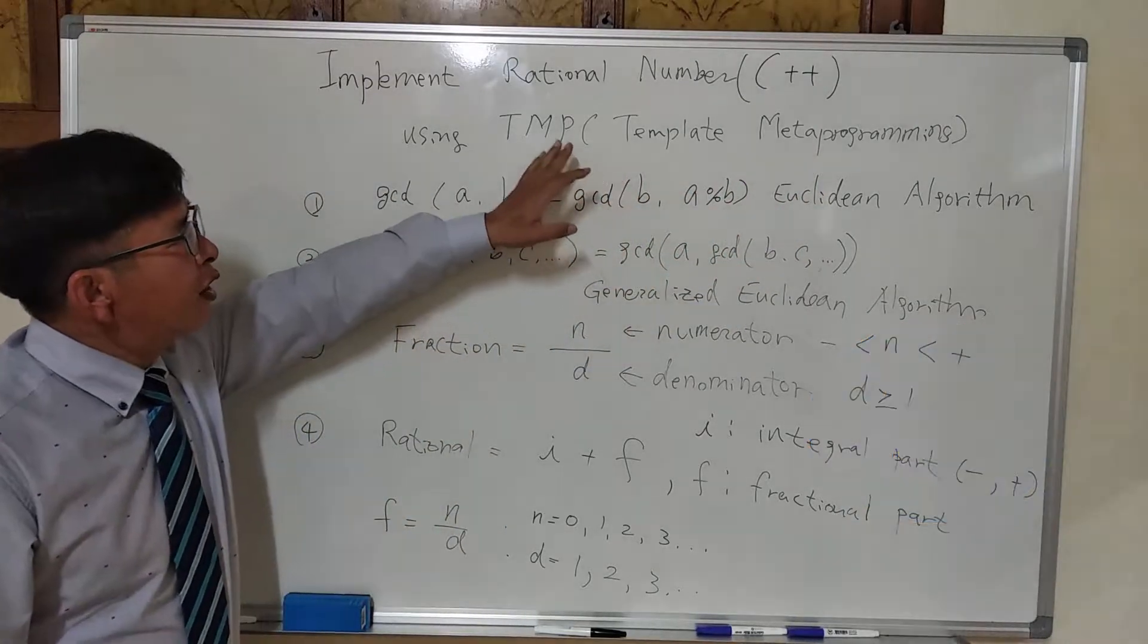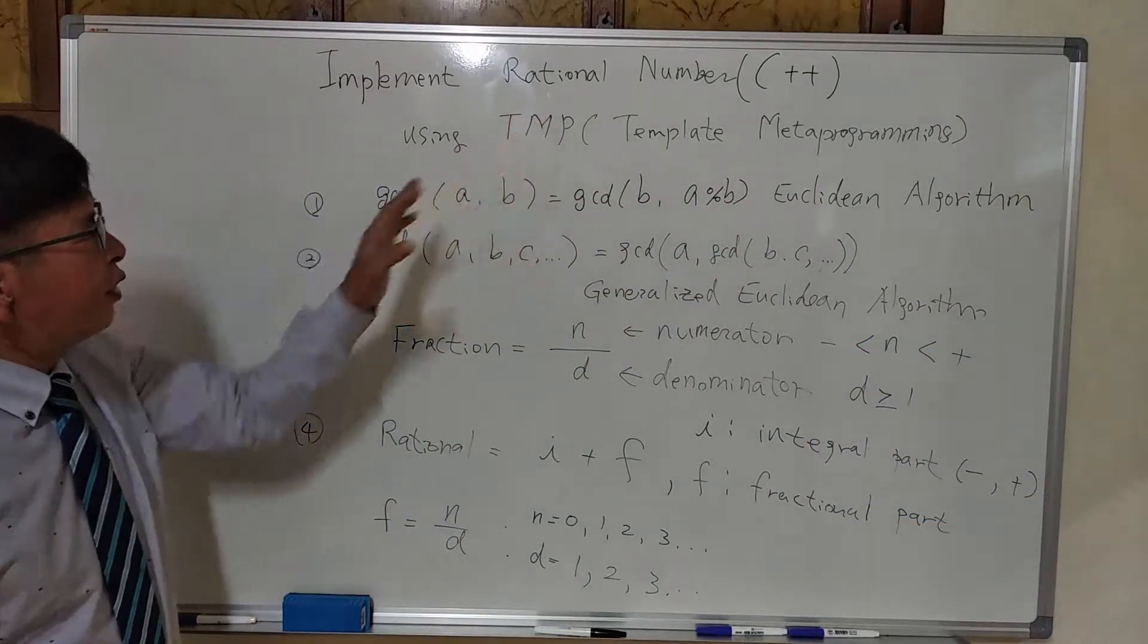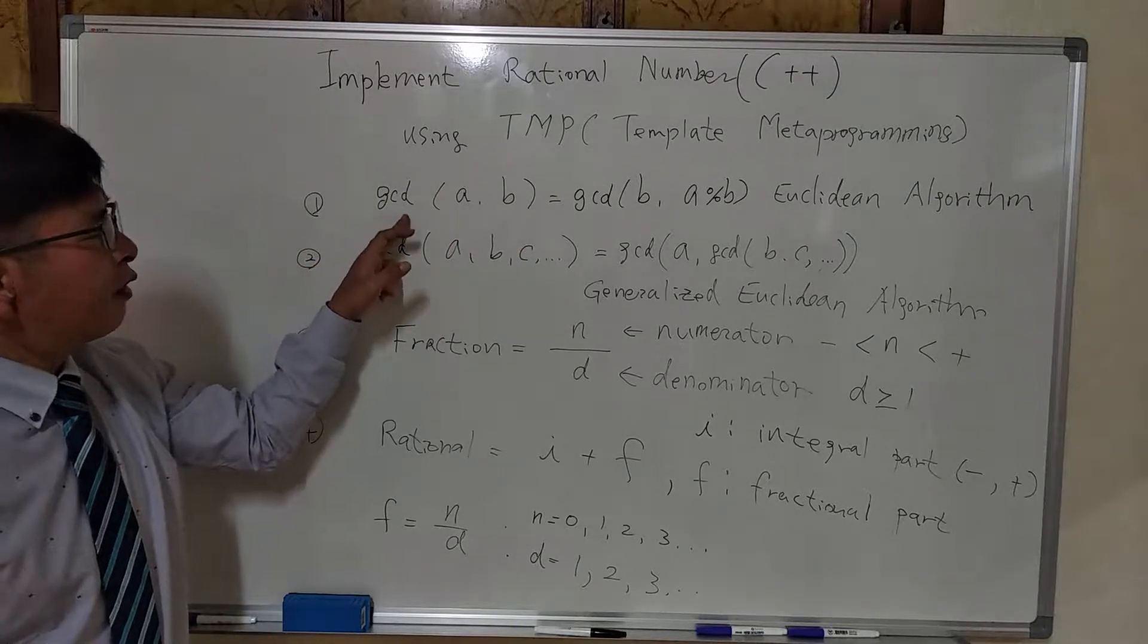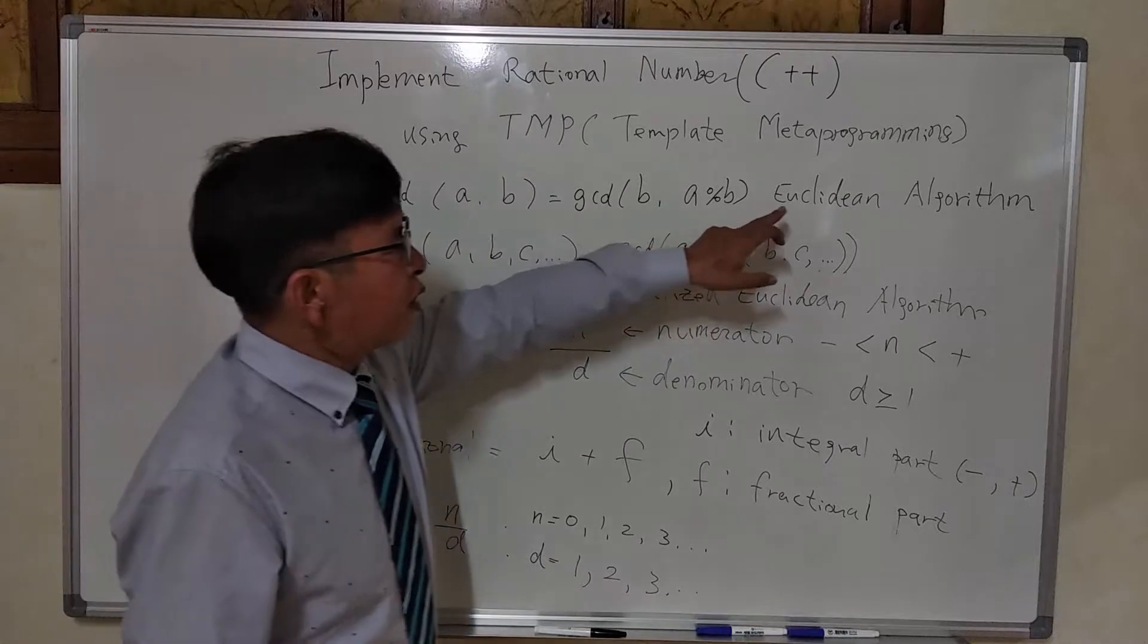To implement rational numbers, we need to understand how to implement GCD, Greatest Common Divisor, using Euclidean algorithm.